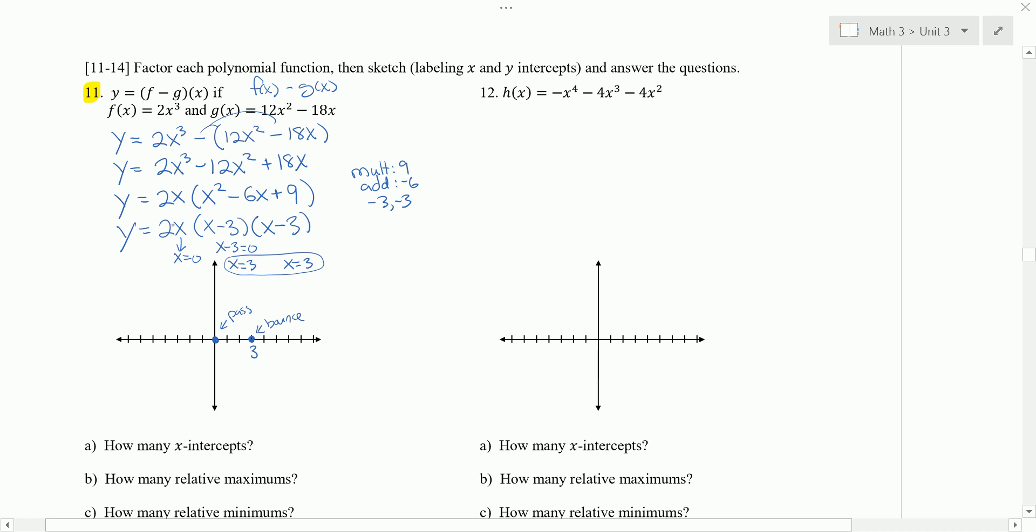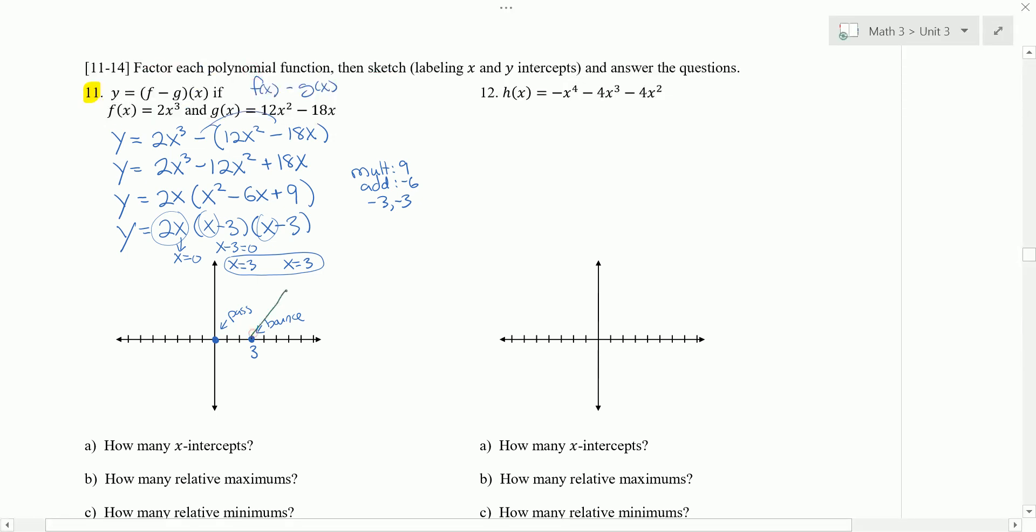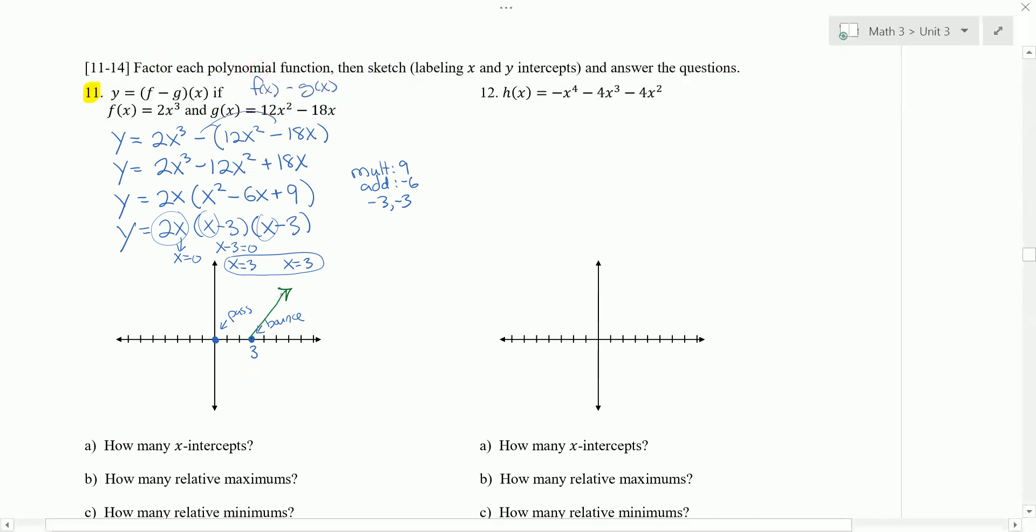We do want to know which way the right end points. So if we were to multiply 2x times x times x together, we get 2x to the third. And our leading coefficient would be positive. So the right end of this graph is going to be pointed up. And it bounces at 3. So when it hits 3, it bounces back up and passes through at 0, 0. So the graph is going to look something like that.